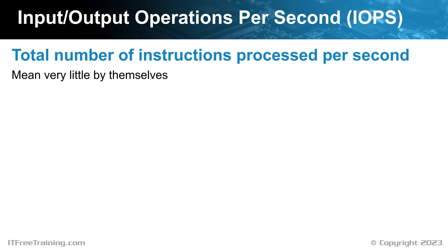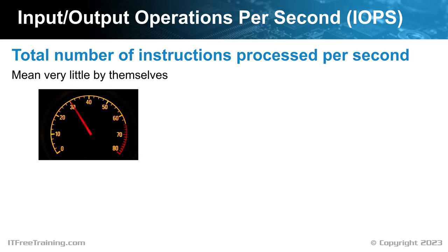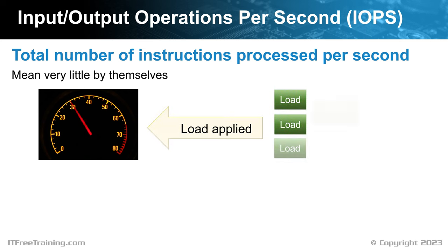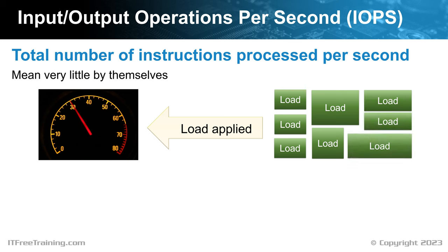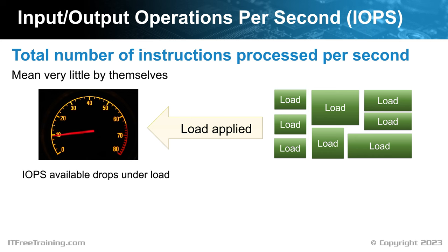The important point to understand is that IOPS by themselves mean very little. To understand how IOPS affects performance, consider it is like a tachometer in a car — it shows you the number of revolutions the engine is currently doing. If the vehicle is not in gear, these revolutions are not being converted into anything useful. In the case of the solid state drive, utilizing the IOPS of the device will result in transferring data to and from the device. When load is applied to the solid state drive, the IOPS available on the device will drop. Solid state drive performance is subject to response time and workload type, so the IOPS need to be high enough so that a lack of IOPS is not causing a bottleneck.